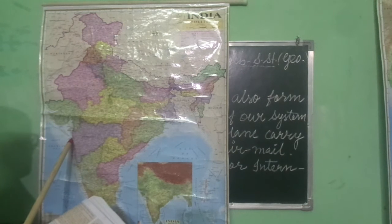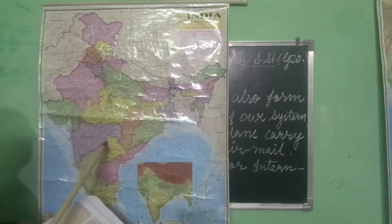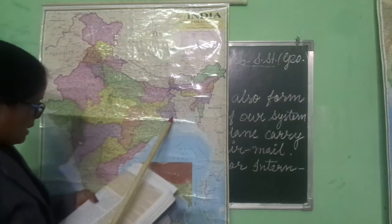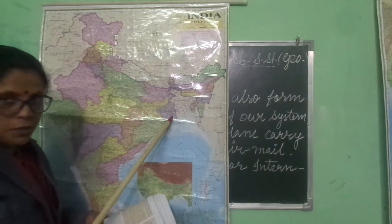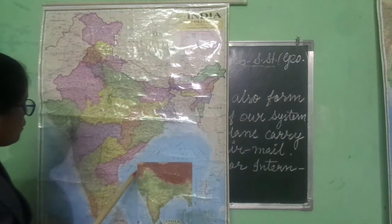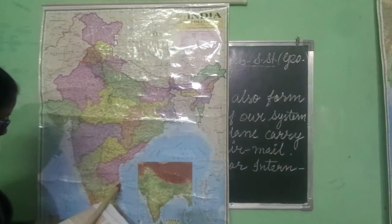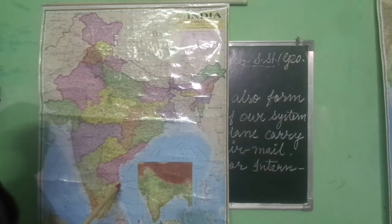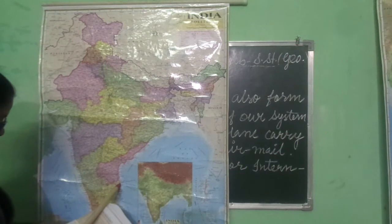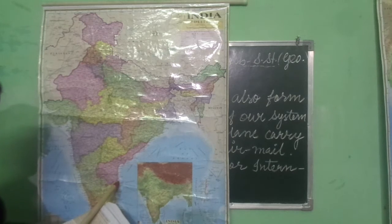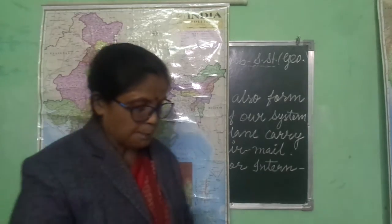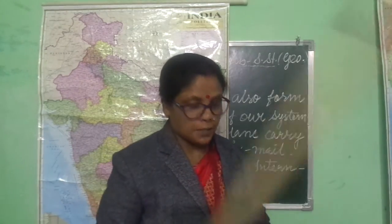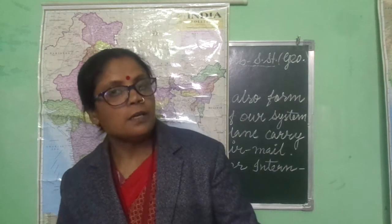The third major international airport is Kolkata — Netaji Subhash Chandra Bose International Airport. The fourth is Chennai — Meenambakkam Airport. And the fifth is Thiruvananthapuram. These airports are important for national air traffic and are connected with various regions and towns across the country.